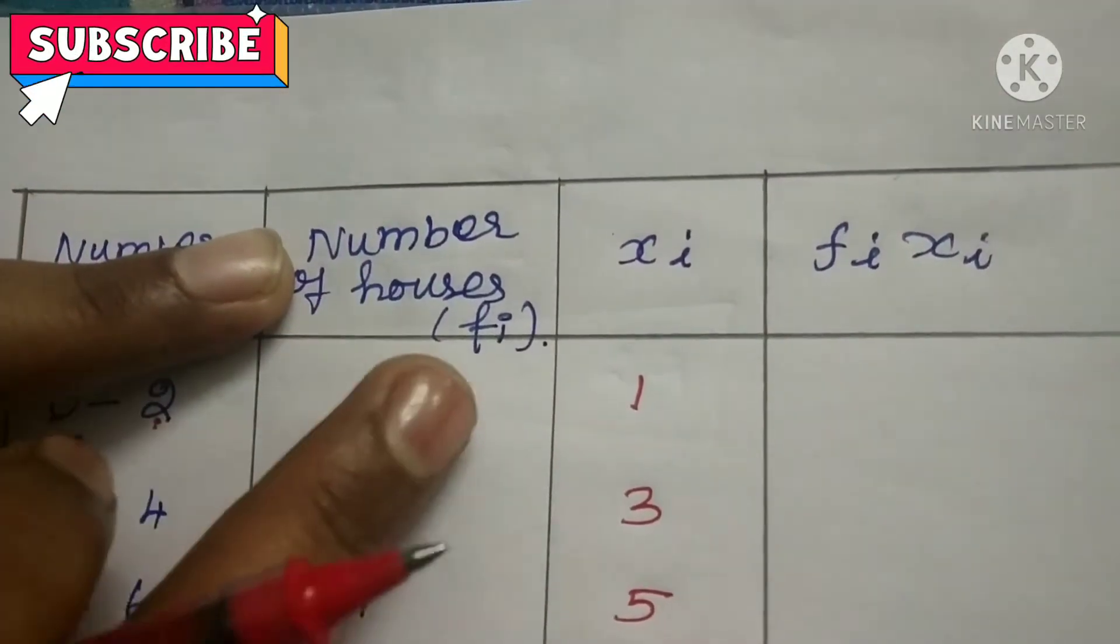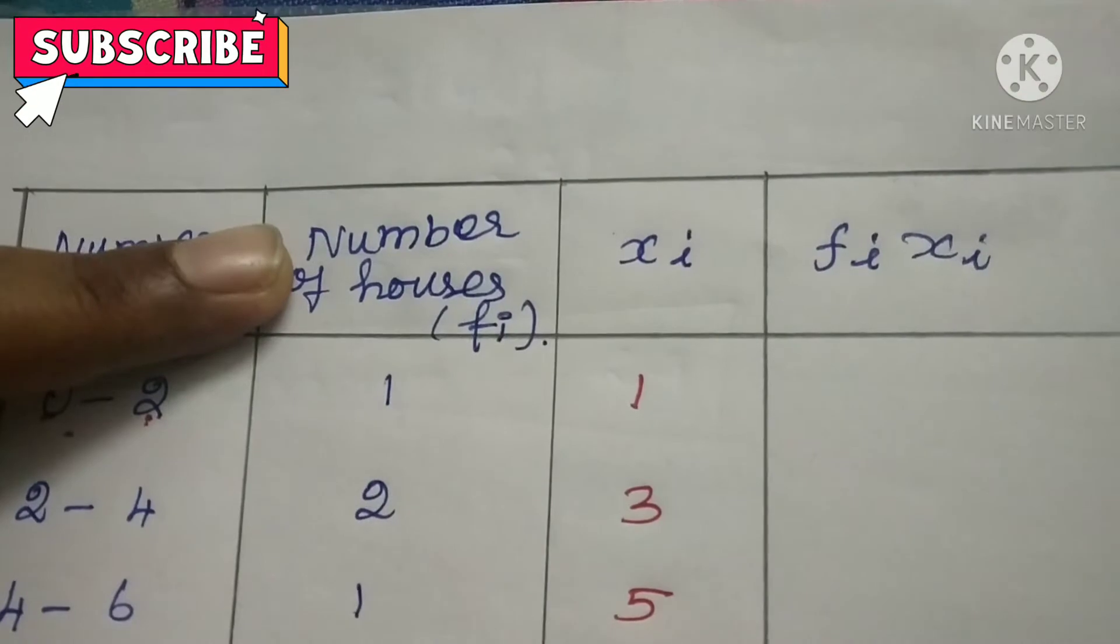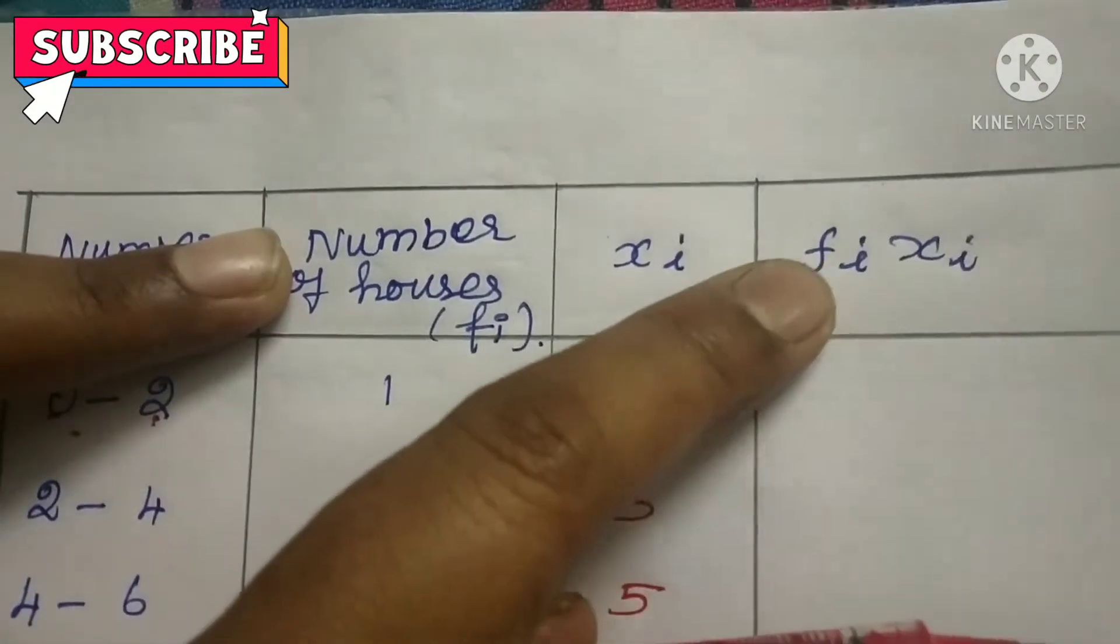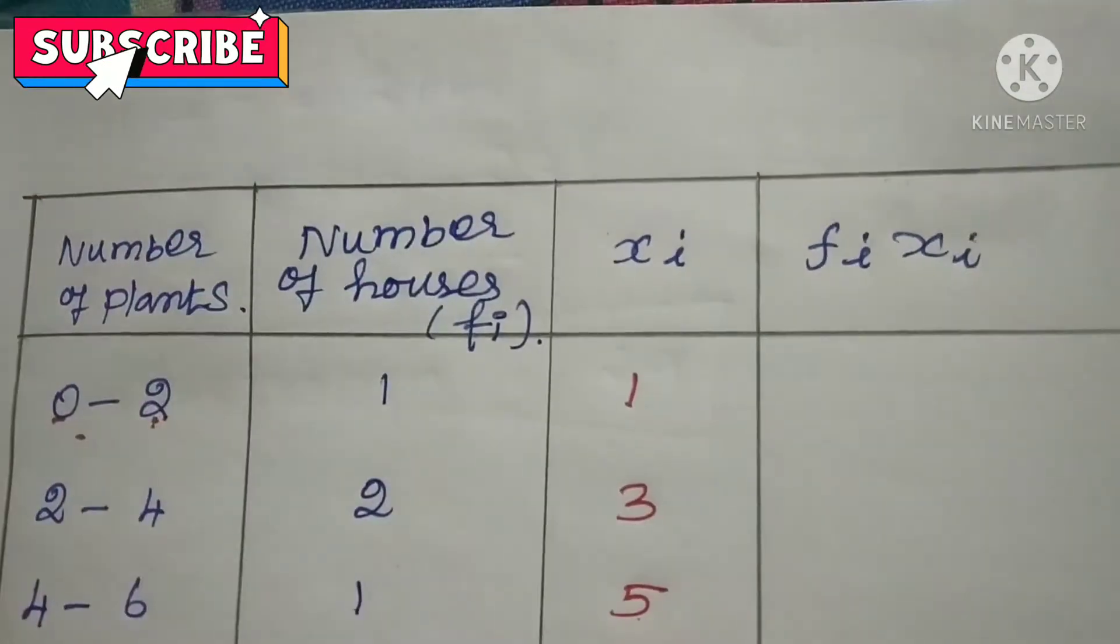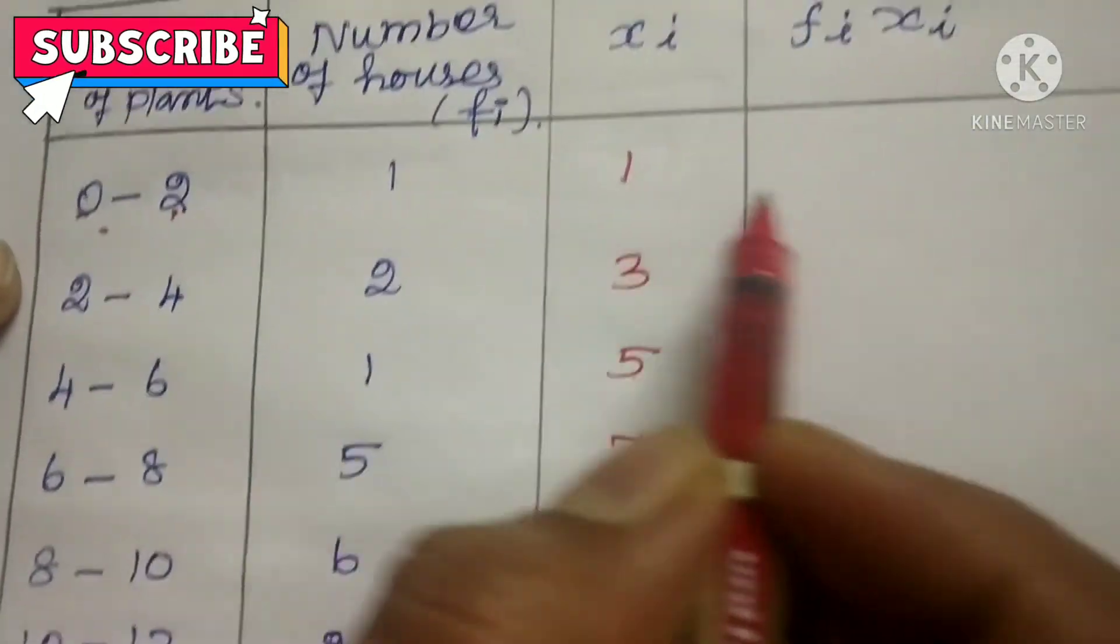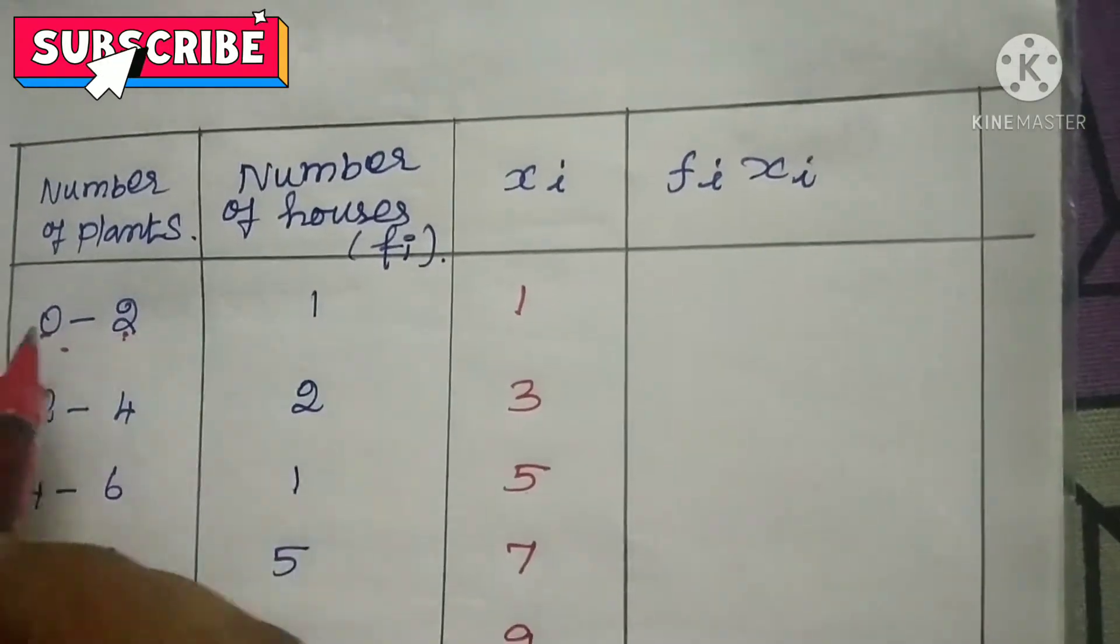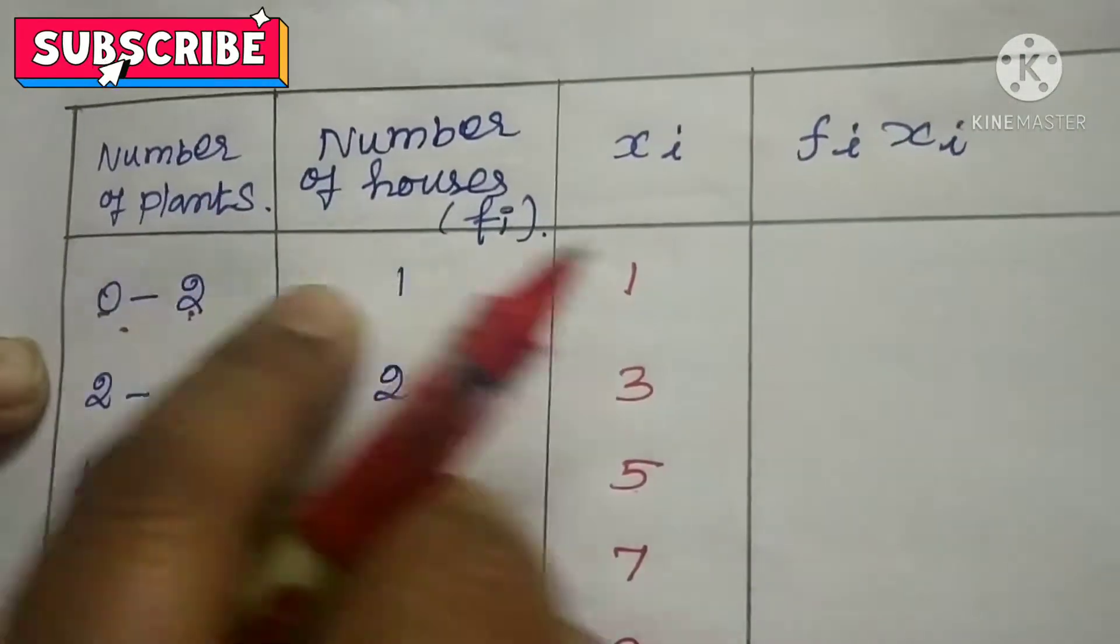Then you have to find Fi Xi. So first you have to write this one properly and arrange it straight. The data must be in order.